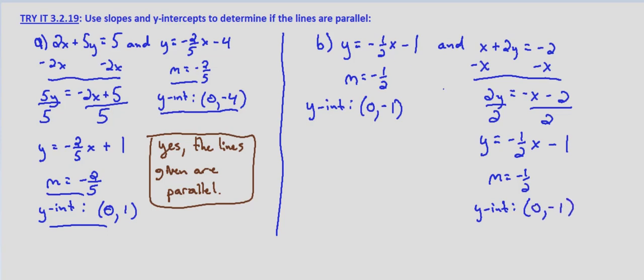But if you'll notice, when we solve for y, we ended up with the same equation that we started with on the left. When we put them in slope-intercept form, they're the same equation.